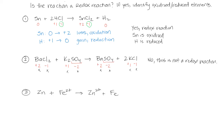Now let's look at the reaction of zinc and iron two-plus to produce zinc two-plus and iron. Identifying all the oxidation states: zinc is in its elemental form, so zinc is zero. Iron two-plus is a monatomic ion — it already has a charge, so its oxidation state is plus two. Zinc two-plus is plus two, and iron is in its elemental form, so it's zero.